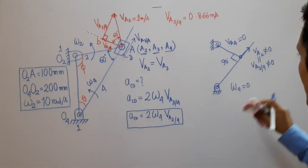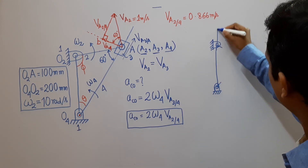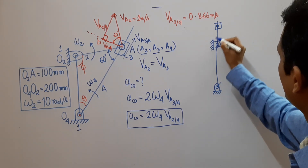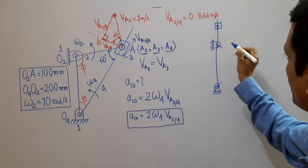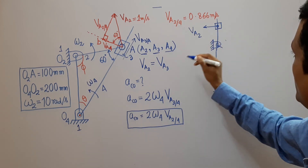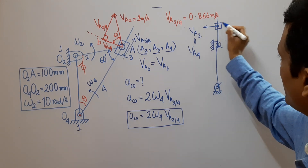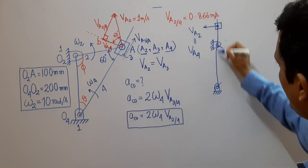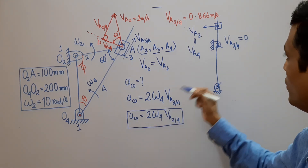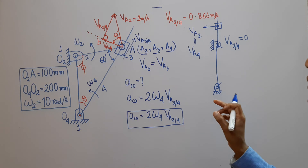Another special case: when the crank and oscillating link are overlapping (collinear), VA2 is perpendicular to this direction and equals VA4, since both are perpendicular to the link. There is no component along link 4, so VA2/4 = 0, and the Coriolis component at this instant is also zero. At all other instants, there will be a non-zero Coriolis component.